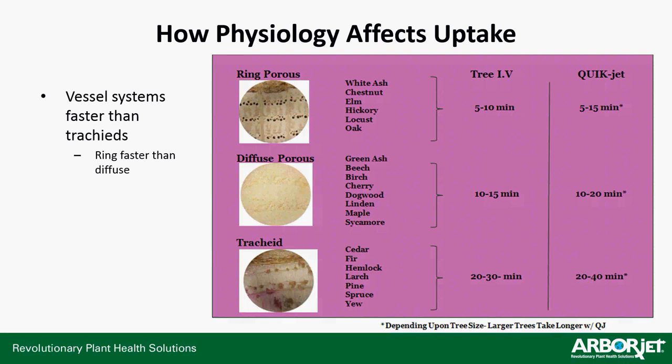Timing: ring porous versus diffuse porous versus tracheid vessel systems. Ring porous is the fastest uptake — about five to ten minutes, maybe 15. Diffuse porous is pretty good at ten to fifteen, up to 20 minutes. And then tracheid systems are the toughest at 20 to 40 minutes or so.